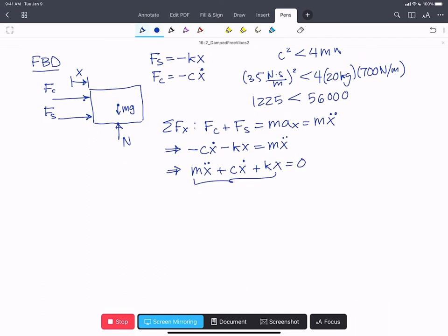And we're going to rearrange that. So we have mx double dot plus c x dot plus kx equals zero. All of these coefficients here have to be positive. So that's really important. If you don't have them all having the same sign at this point, then there's something that's gone wrong in the setup of your free body diagram. And we can put them into a standard form by dividing by m. We get x double dot plus c over m x dot plus k over m x equals zero.